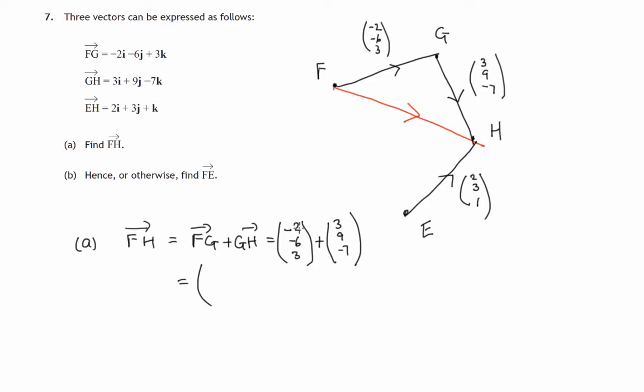Now we add corresponding components. X components: -2 + 3 is 1. Y components: -6 + 9 is 3. And Z components: 3 + (-7) is -4. Be polite to write them in terms of i, j, and k since that's how we were given these. So it'd be 1i + 3j - 4k.